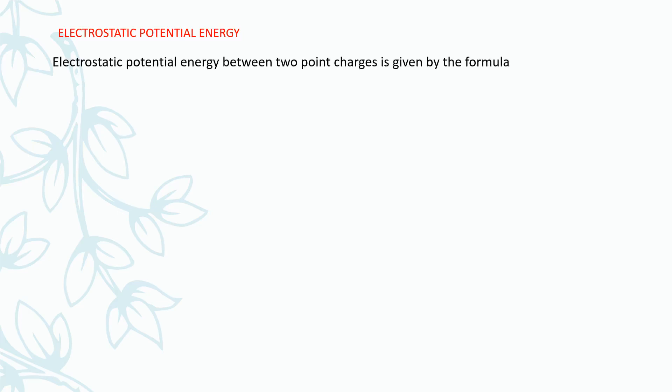Hello students, today we will discuss about the variation of electrostatic potential energy with distance. Electrostatic potential energy is the total amount of work done in bringing the various charges to their respective positions from infinitely large mutual separation. The formula for electrostatic potential energy is U = q1*q2 / (4πε₀r).